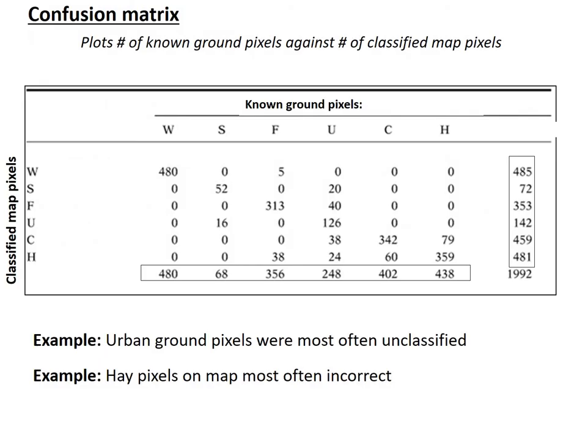Once you have done the ground truthing and determined which ground truth points are correct and which are incorrect, we make what's called a confusion matrix. I'll try to walk you through it here.